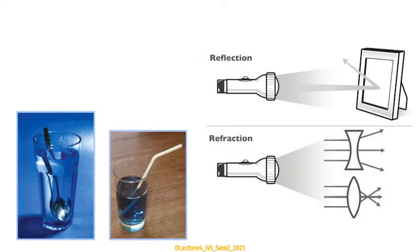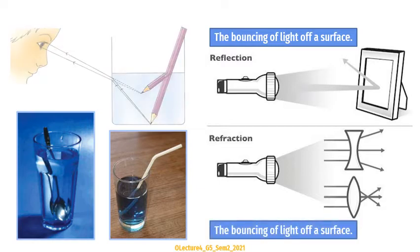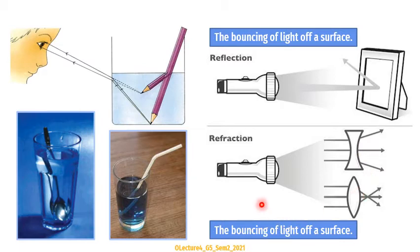Light rays bend when they move from water into the air, from glass into the air. What's the difference between reflection and refraction? Reflection is when light bounces off a surface — it changes direction in the same medium and does not pass through the mirror. With refraction, the light ray bends and passes through to the second side, changing its direction. The bending of light rays as they pass from one substance into another is called refraction.